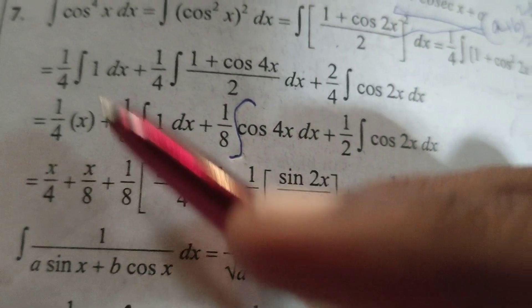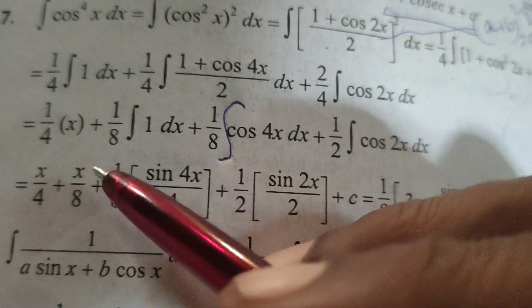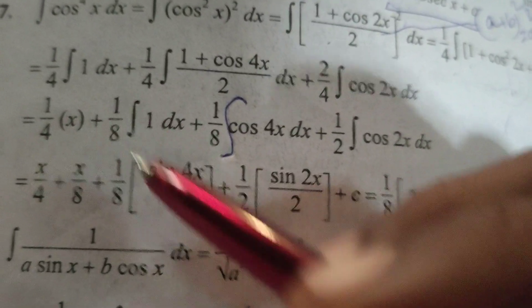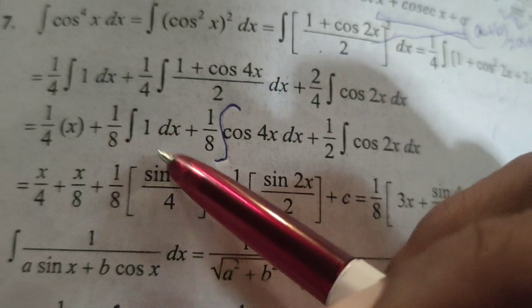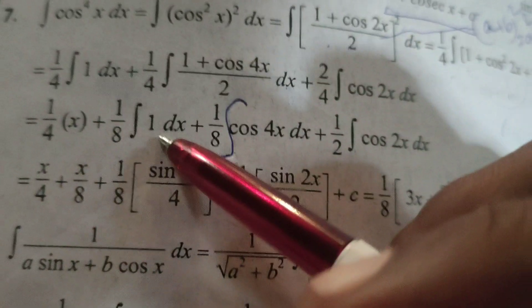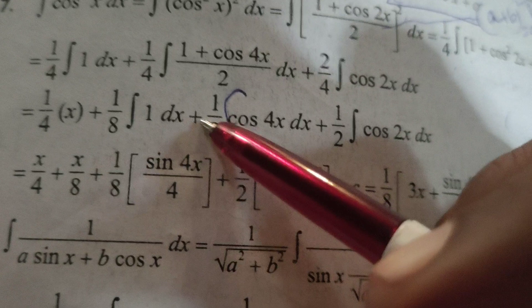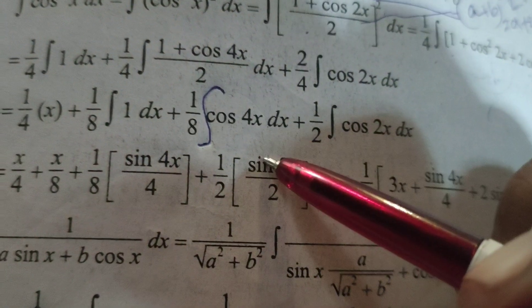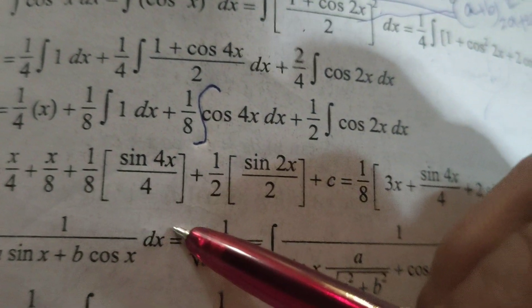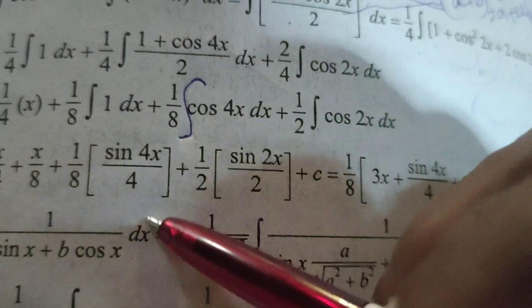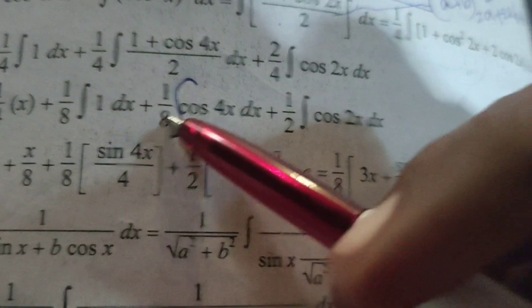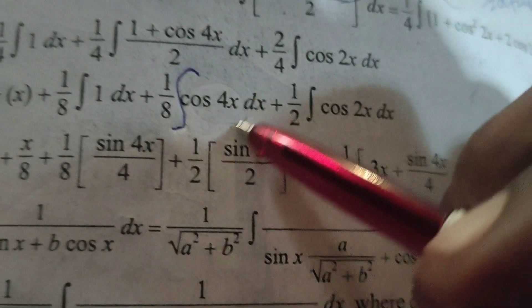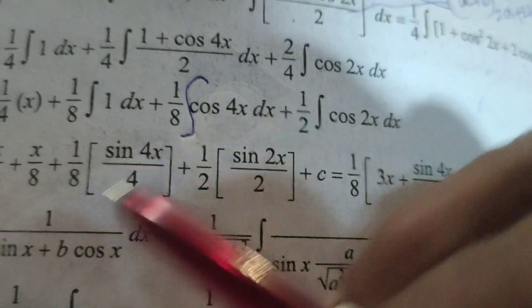Now integrating, this is x already integrated. Here this is x by 4 plus x by 8 plus 1 by 8 into cos 4x. Integration of cos 4x is sin 4x, and again 4x means divide by 4.